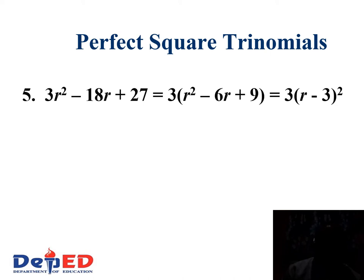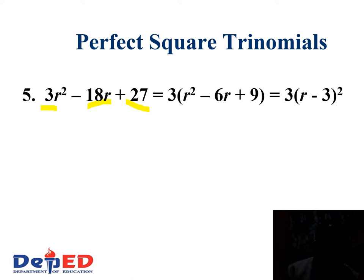The fifth example: we have 3r² minus 18r plus 27. First thing to do, do we have a GCF? The GCF is 3, so all terms are divisible by 3. Dividing each term by 3: 3r² divided by 3 is r², negative 18r divided by 3 is negative 6r, and positive 27 divided by 3 is positive 9. Now let us check if this trinomial is a perfect square.